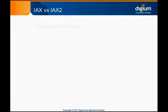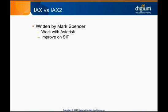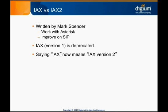EECS was written by Mark Spencer to work with Asterisk and to improve on some of the disadvantages present in SIP. It's called version 2 because there was an earlier version that has been deprecated for several years now. These days, anyone who says they're using EECS really means EECS version 2. The EECS version 2 protocol is an open standard defined in IETF RFC 5456.